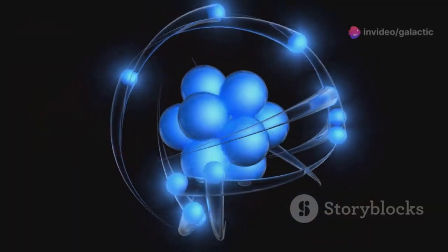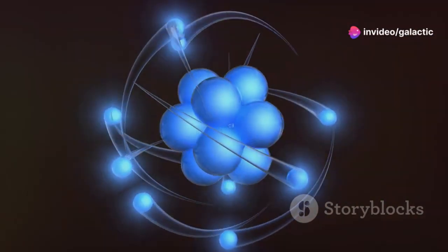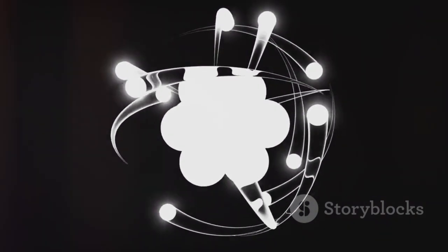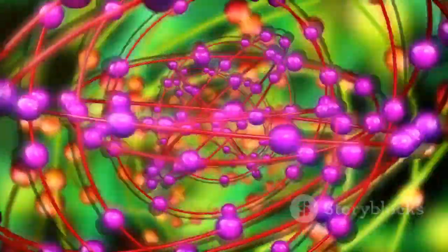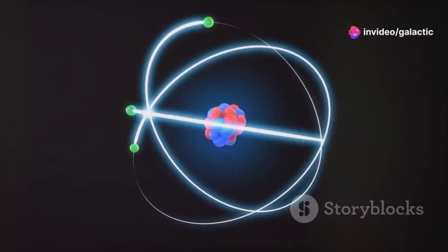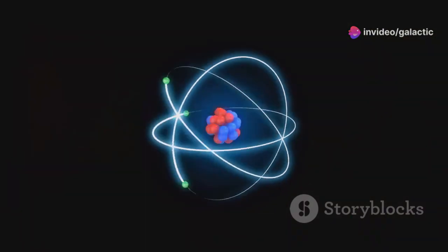Just as electrons orbit the nucleus of an atom, planets orbit the sun. This analogy has helped scientists develop models explaining both atomic and celestial systems. By studying the microcosm of atoms, we gain insights into the macrocosm of the universe. The echoes of the universe resonate within us, reminding us of our profound connection to the cosmos.